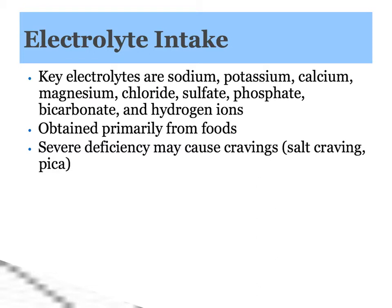Let's go on to electrolytes. Electrolytes are ions that can transmit electricity. We've talked about the potentials in the nervous system and in the muscle systems — those are really electrical impulses — so we need these ions available to have a little bit of electricity happen in our cells. Some of the key electrolytes are sodium and potassium, calcium, magnesium, chloride, sulfate, phosphate, bicarbonate, and hydrogen — too much of which will make us more acidic than we need to be. We get our electrolytes primarily from foods, and it doesn't usually end up being a problem; people are not easily deficient in electrolytes if you're eating enough food.